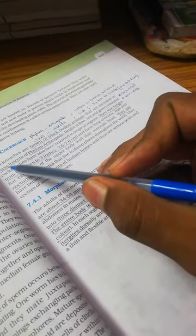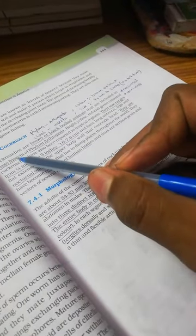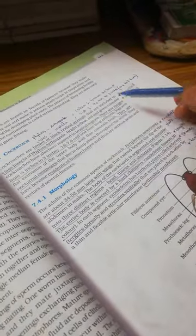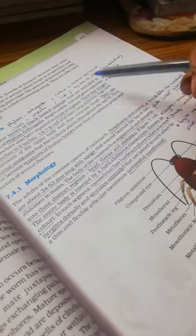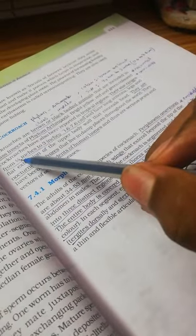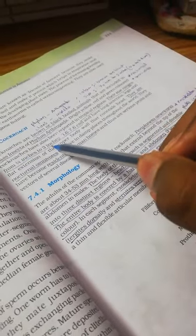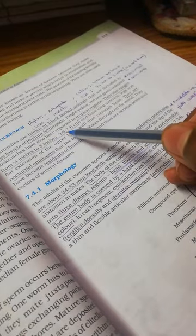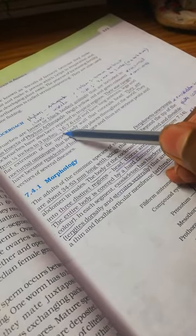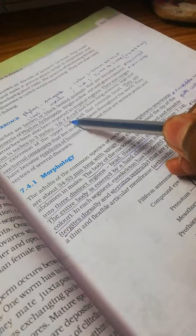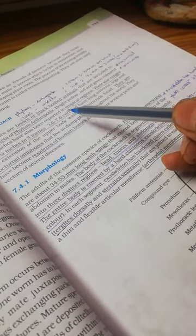Cockroach belongs to Insecta and phylum Arthropoda. In tropical regions they appear yellow, red, and green colored also. Their size varies from one-fourth inches to three inches, and in centimeters 0.6 to 7.6 centimeters.